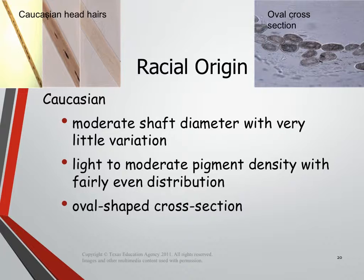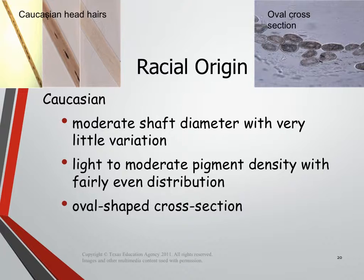We're going to start with the racial origin of Caucasian. People of Caucasian descent have what we call a moderate hair shaft diameter — the hair isn't really thick or very thin, it's medium thickness, with very little variation. The hair seems to be the same thickness all the way through. In terms of pigment, it tends to be light to moderate, evenly distributed throughout the hair. The part I want you to draw is the shape of the cross section. People of Caucasian descent tend to have oval-shaped cross sections — please sketch a couple of those ovals next to that section in your notes.